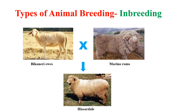Inbreeding refers to the mating of closely related animals within the same breed. Inbreeding helps in the accumulation of superior genes and elimination of undesirable genes. An example of inbreeding is the development of Hisardale, which is a new breed of sheep produced by crossing Bikaneri ewes and Australian Merino rams.